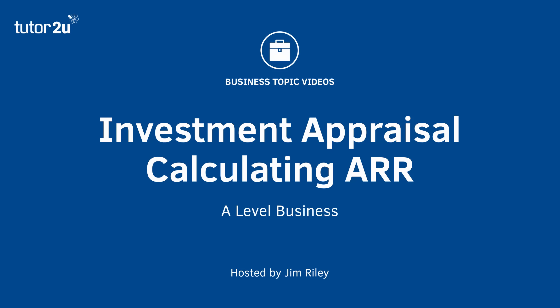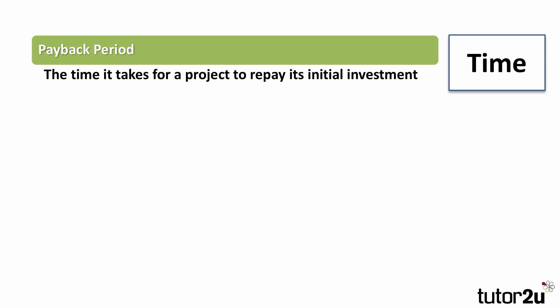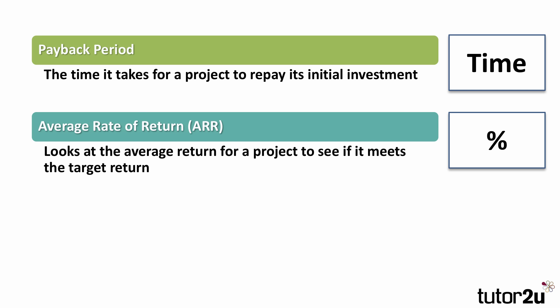Hi there. Let's take a look at how we calculate one of the three main methods of investment appraisal. Don't forget there are three main types of investment appraisal. The payback period — this is measured in terms of time, how long it takes a project to repay the initial investment.